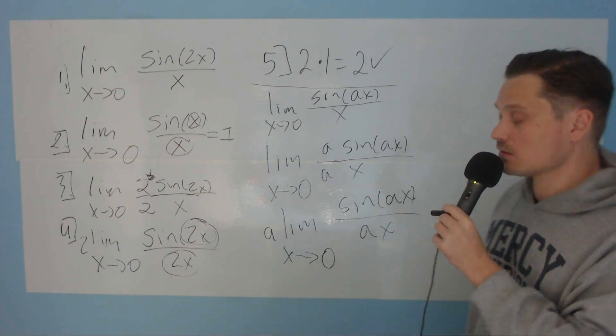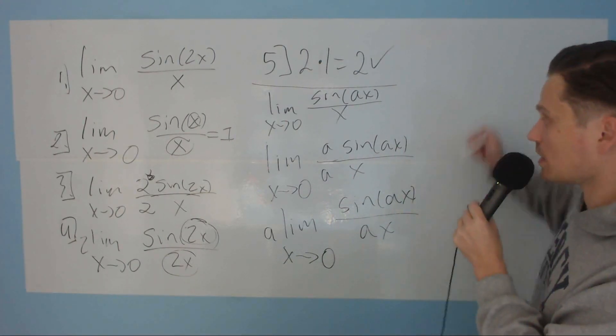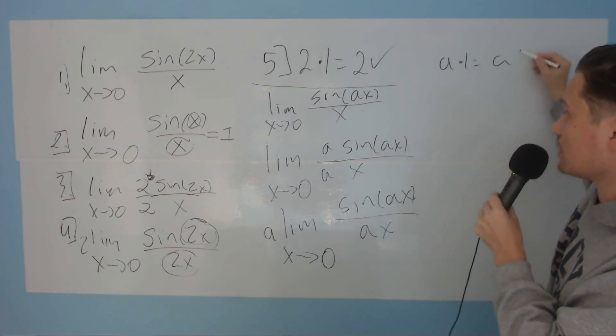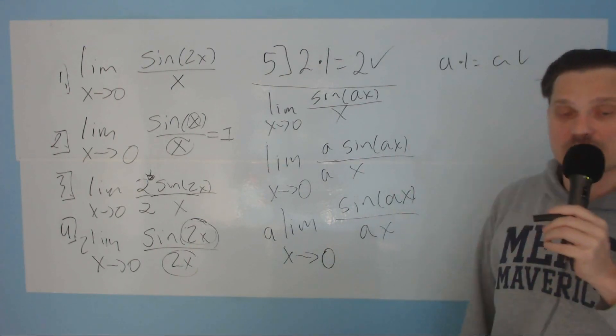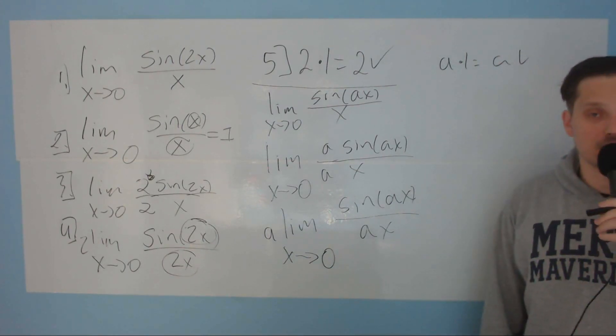And then this new limit, sine of ax over ax, that is equal to 1. So you can simply write at the end it's a times 1 or a. And that's the value of this limit. That is it. Thanks so much for watching. Leave a like. I'll check you out in another video.